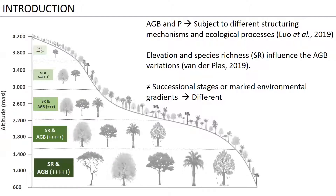According to the literature, what we know is that both species richness and above-ground biomass increase when elevation decreases, and both can reach their lowest values when elevation increases. In Ecuador, we have several forests in different successional stages and with marked environmental gradients because of the mountains, and probably these patterns can be different.